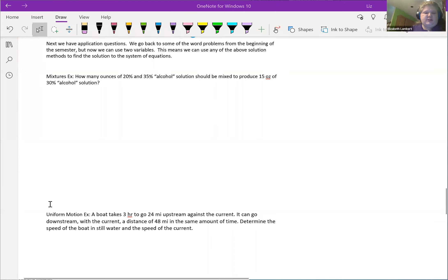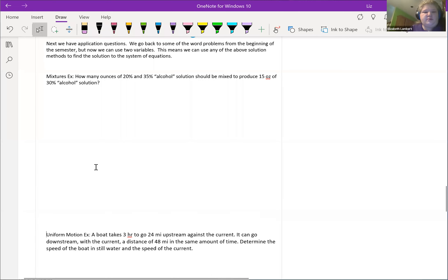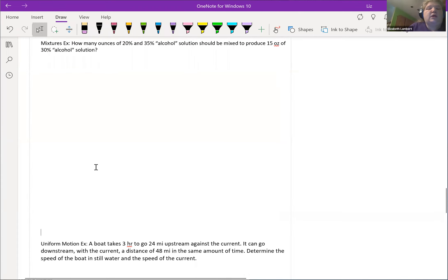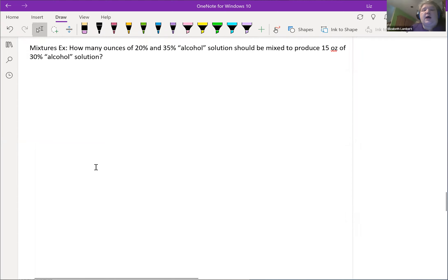So our first one: alcohol mixture. I want to know how many ounces of 20% and 35% alcohol solution should be mixed to produce 15 ounces of 30% alcohol solution. So I've got two different kinds of booze and I want to mix a drink that's only 30% alcohol for some magical reason.